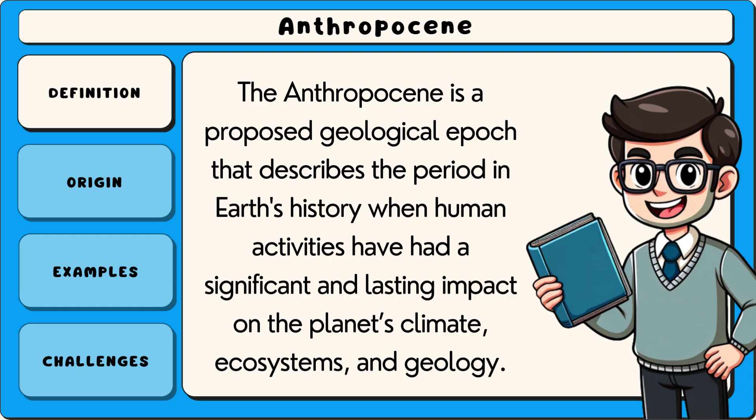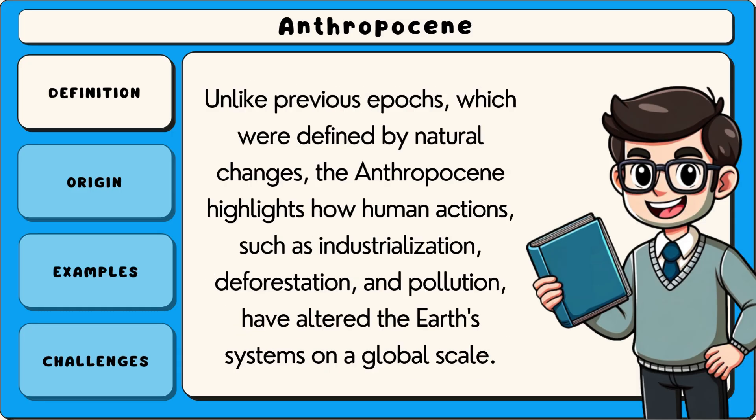The Anthropocene is a proposed geological epoch that describes the period in Earth's history when human activities have had a significant and lasting impact on the planet's climate, ecosystems and geology. Unlike previous epochs which were defined by natural changes, the Anthropocene highlights how human actions such as industrialisation, deforestation and pollution have altered the Earth's systems on a global scale.